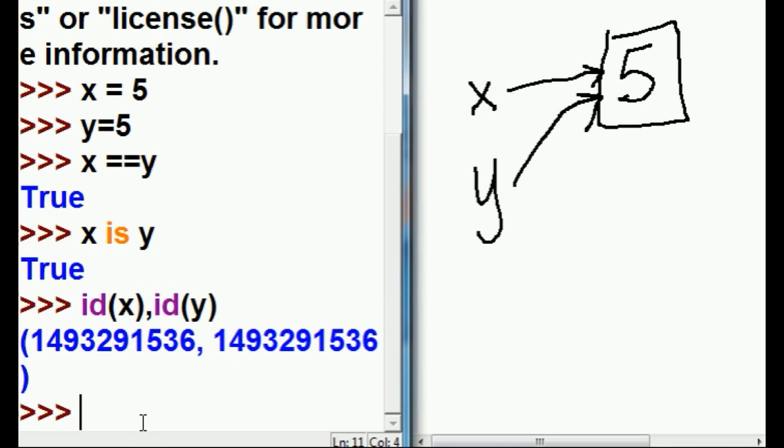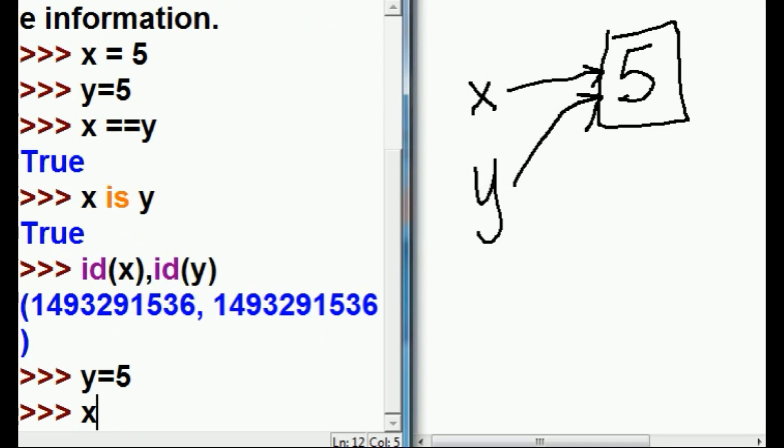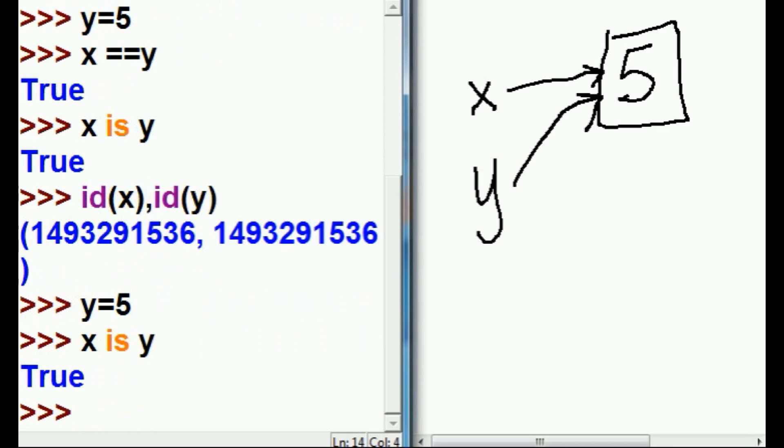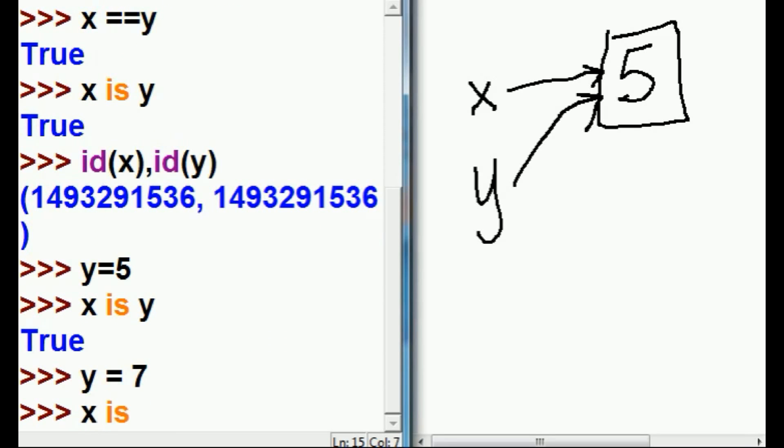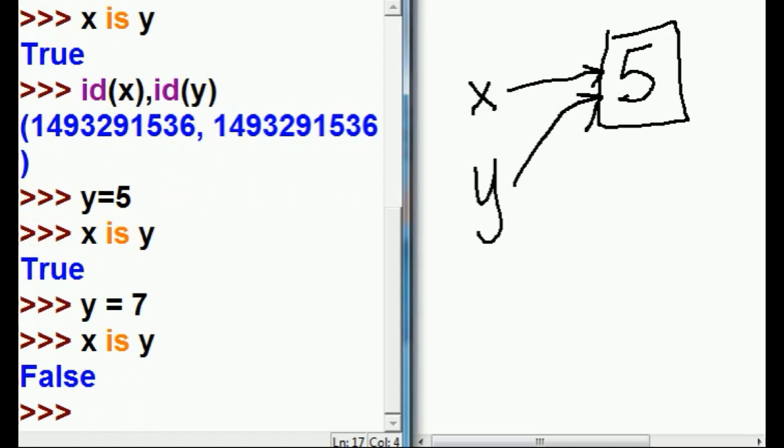But I can change that, or can I? Let's find out. y equals 5. Same number. x is y, still true. But what if I now key in y equals 7? x is y, false.